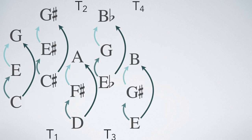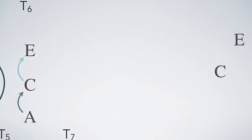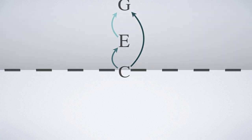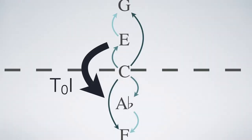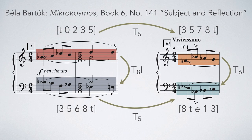Major triads are transpositionally related to one another, while major and minor triads are inversionally related to one another. The same observation applies in Bartók's Subject and Reflection. The four pitch class sets we've just examined all have the same intervallic content, and that's why we can find these transpositional and inversional relationships among them.